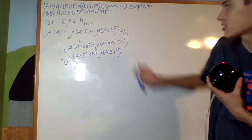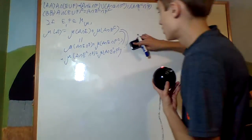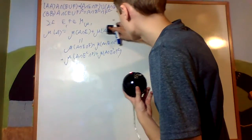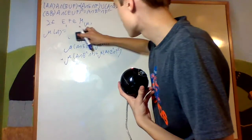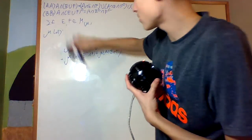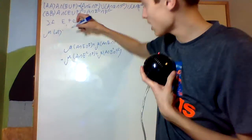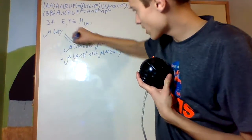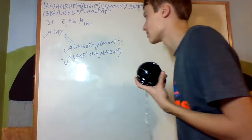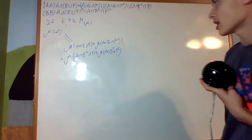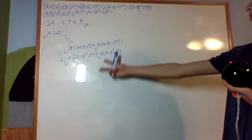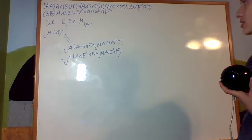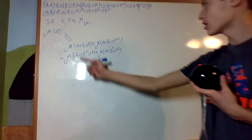This second term is equal to μ(A∩E complement∩F complement) by the measurability of F. So let's just skip that step and say μ(A) is equal to that sum of three terms. What's the point of doing this? Well, if you look: